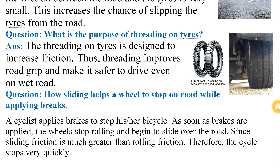The last question for today: how does sliding help a wheel to stop on a road while applying brakes? Rolling helps in moving a vehicle, but how do we stop it? Whenever brakes are applied, the rolling friction is replaced by sliding friction because the tires interlock with the brake, which is a situation of drifting. As soon as brakes are applied, the wheel stops rolling and begins to slide over the road.